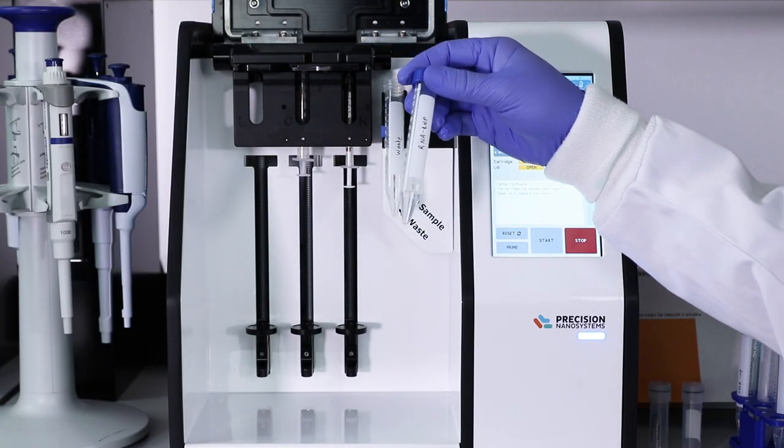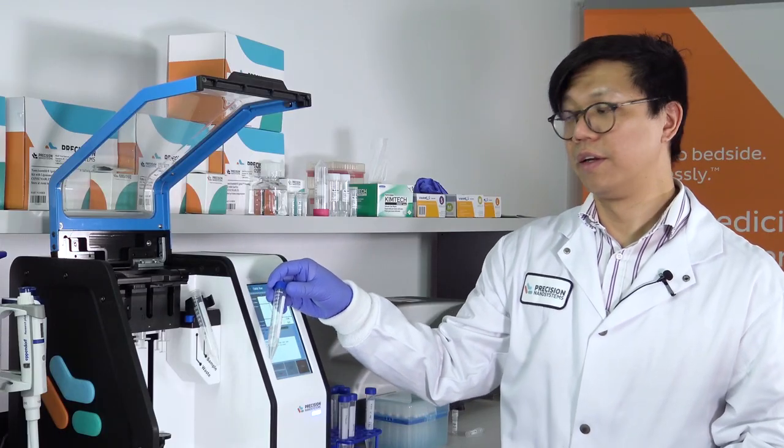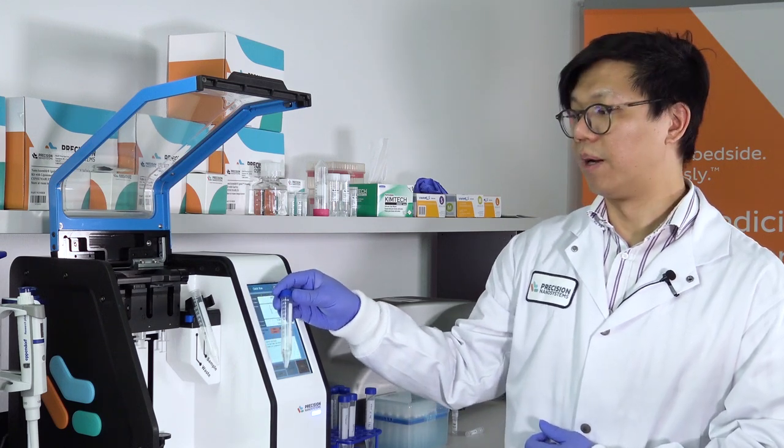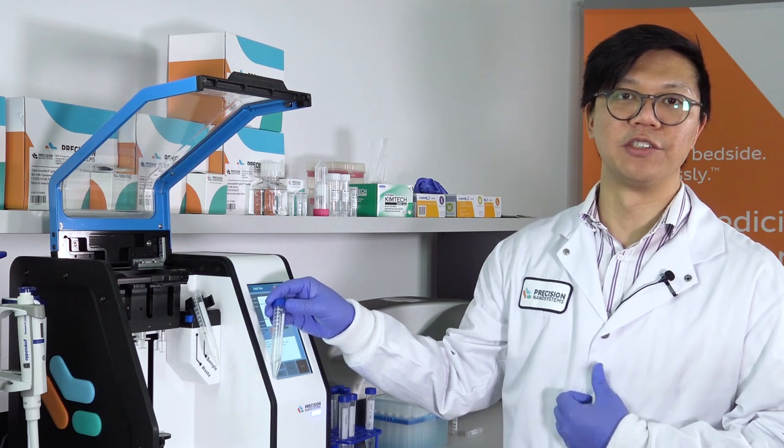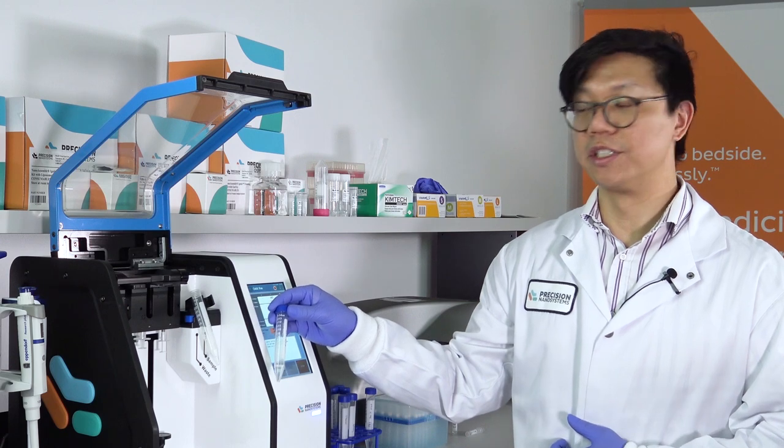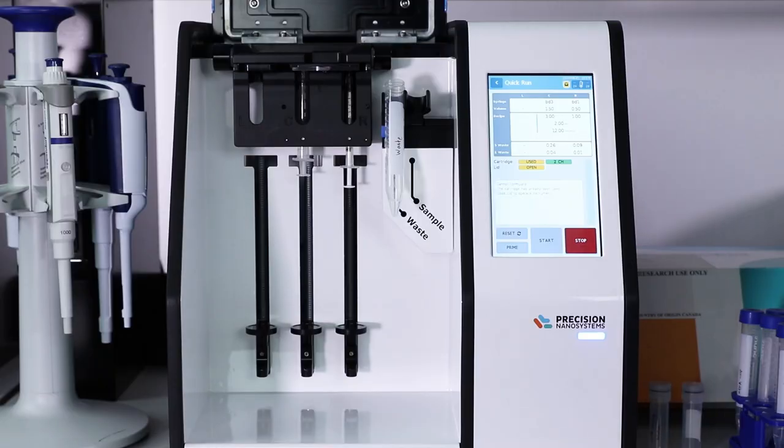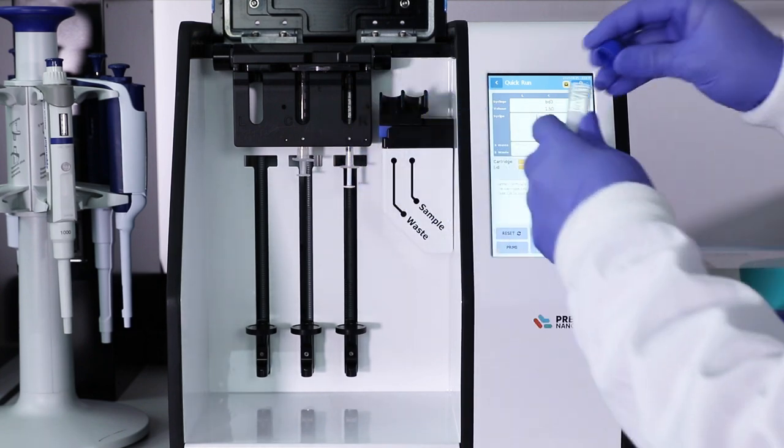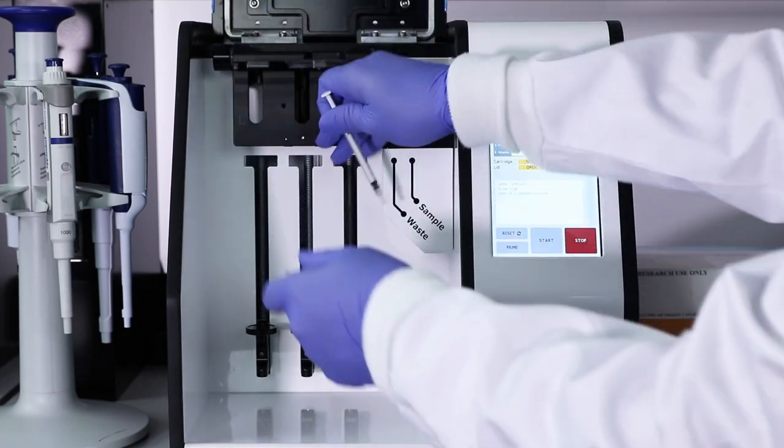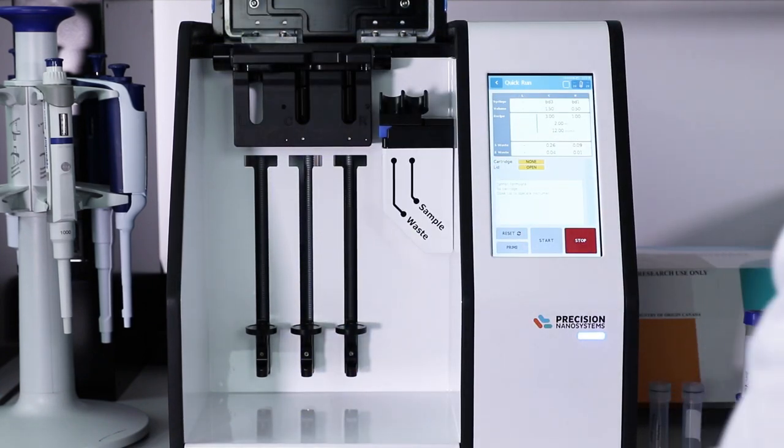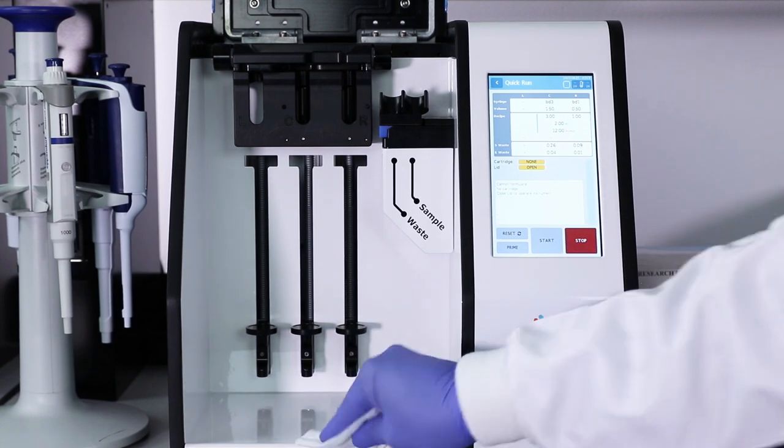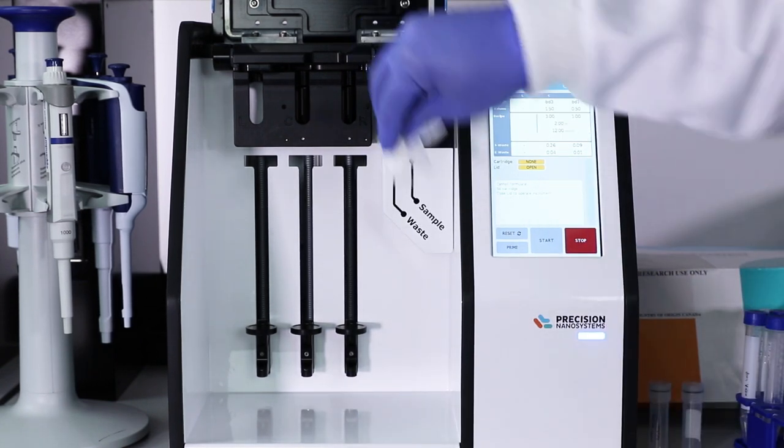As the sample comes off of the instrument, because we did a 3 to 1 formulation, it'll be in about 25% ethanol. Typically, you would dilute this right away and prepare it for downstream processing, such as tangential flow filtration, or at this scale, typically Amicon filtration, which is a centrifugal filtration method. We'll unload the rest of the instrument as well. We'll take the waste, remove the syringes and the cartridge, and that is all disposable. And last but not least, we will do a quick wipe of all the surfaces, and you're ready for your next run.